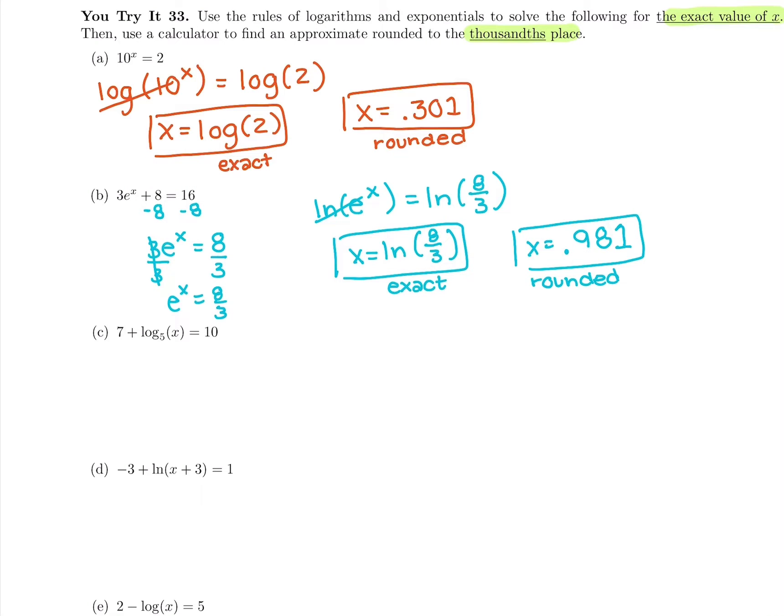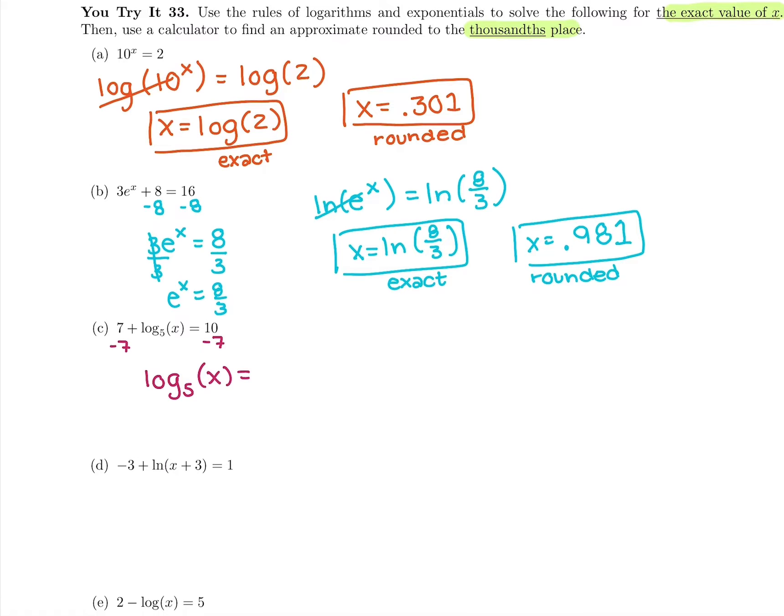And keep going with the next one. See if you can pause it and get the answer. First thing to do is subtract 7 to try to isolate that logarithm, get it on one side by itself. So I have log base 5 of x equals 10 minus 7 is 3.